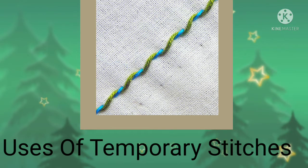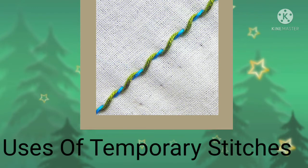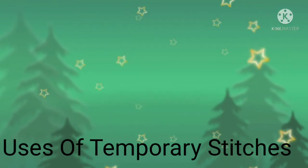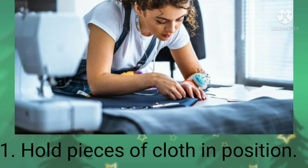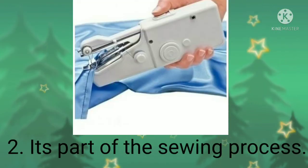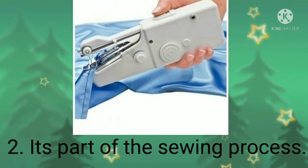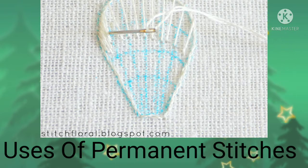Now let's look at the uses of temporary stitches. Number one: temporary stitches are used to hold pieces of cloth in position while working on a particular material. Number two: temporary stitches are part of the sewing process — they aid the making of permanent stitches.